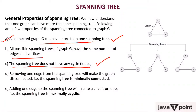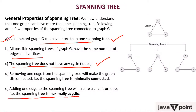Fifth, adding one edge to a spanning tree will create a circuit. So a spanning tree is maximally acyclic — it is acyclic, meaning it has no cycle, but if you add even a single edge, it will become cyclic. That is the maximum limit a spanning tree has achieved.